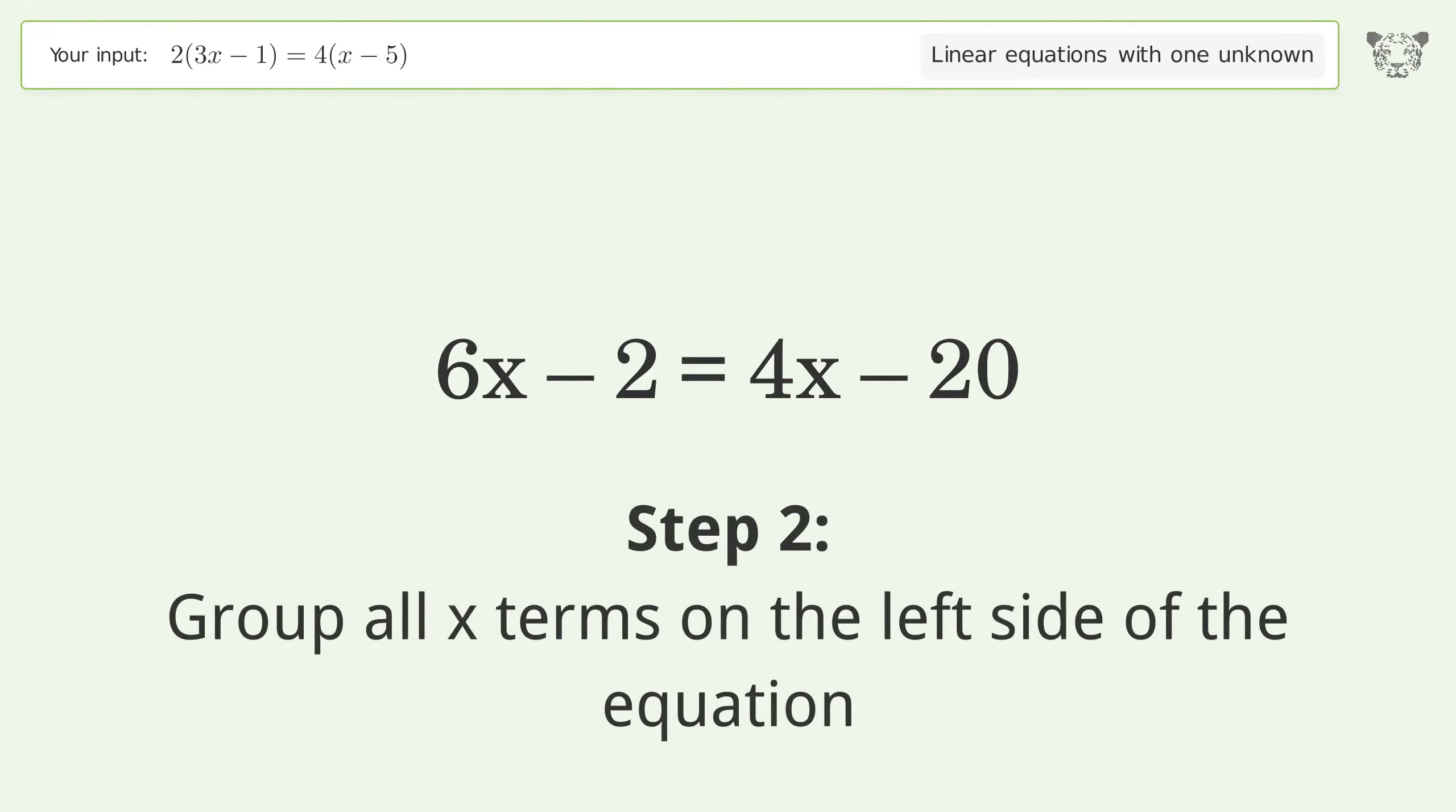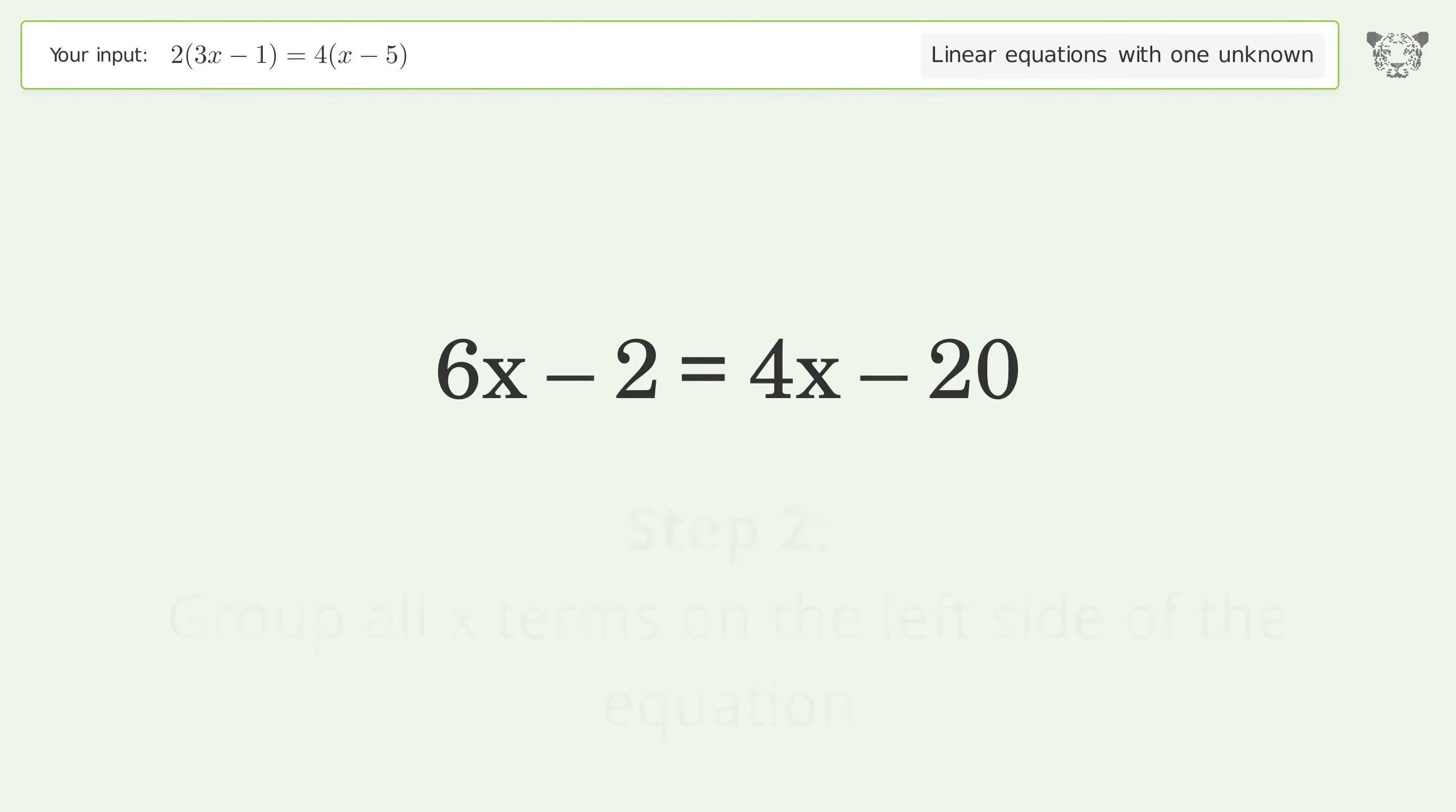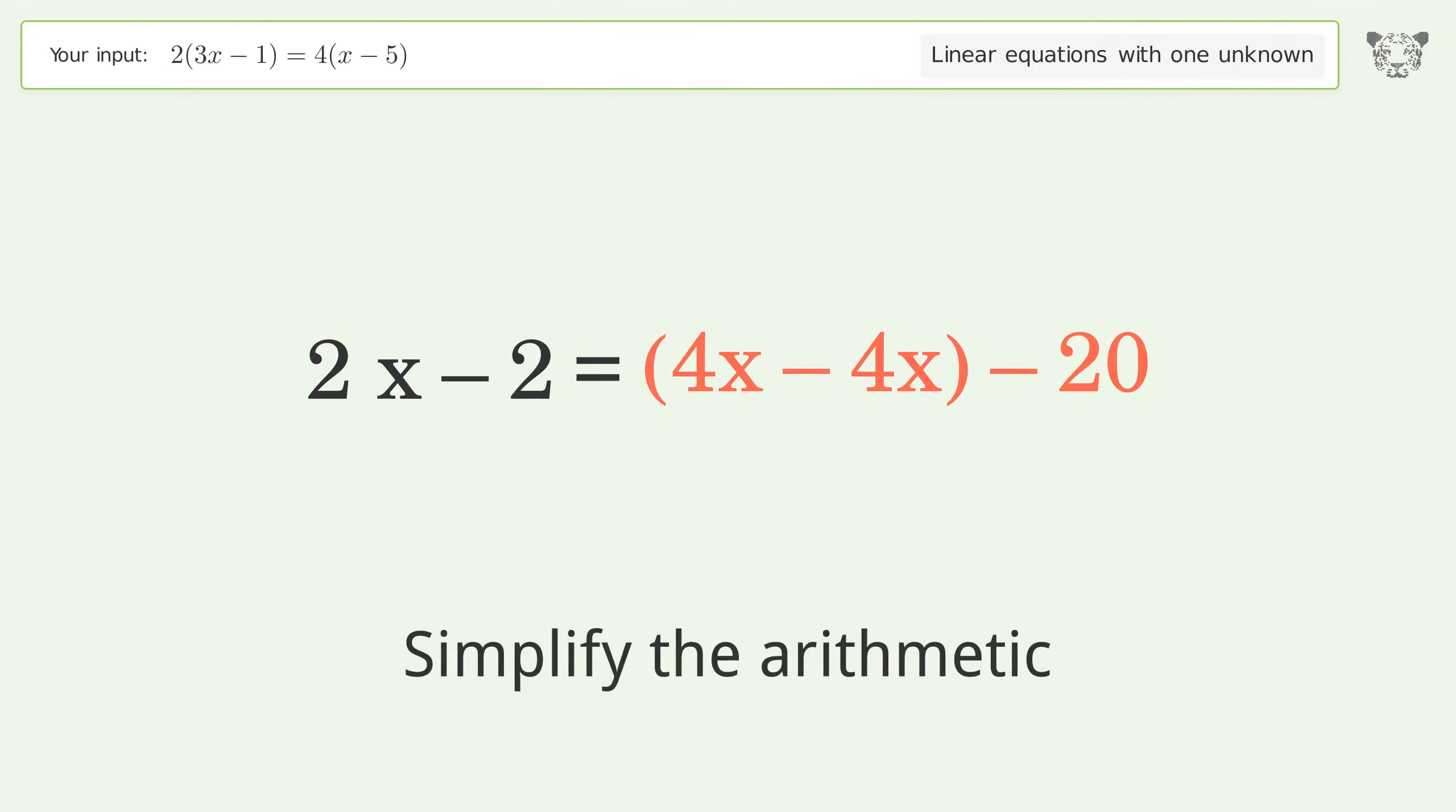Group all x terms on the left side of the equation. Subtract 4x from both sides. Group like terms. Simplify the arithmetic. Group like terms. Simplify the arithmetic.